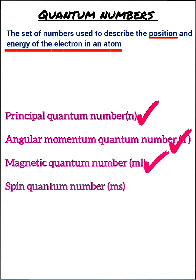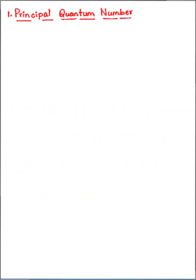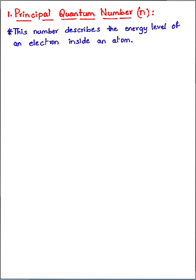The four quantum numbers are: principal quantum number, angular momentum quantum number, magnetic quantum number, and electron spin quantum number. Let's start with the first one — the principal quantum number — denoted by the symbol n. Here n is an integer: 1, 2, 3, 4, and so on.